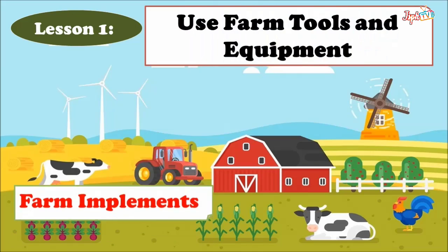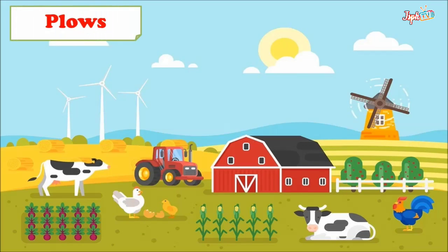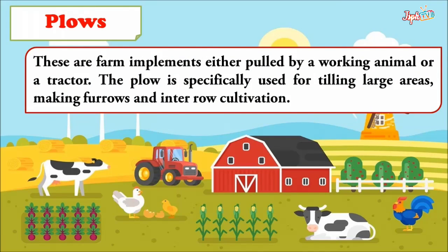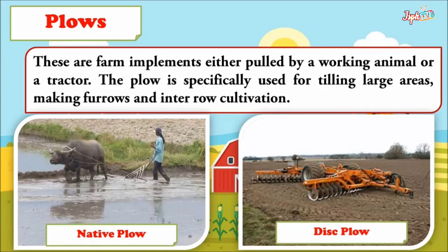Now let us proceed to farm implements. These are accessories which are being pulled by working animals or mounted to machineries like a hand tractor or tractor, usually used in the preparation of land. They are usually made of a special kind of metal. First, we have plows — farm implements either pulled by a working animal or a tractor.